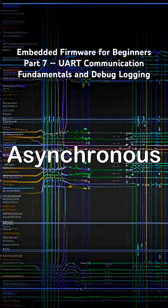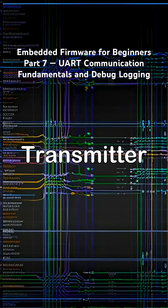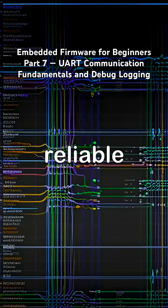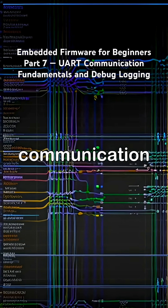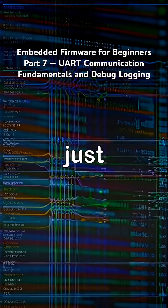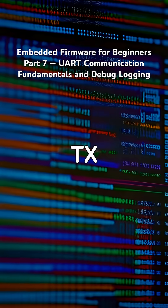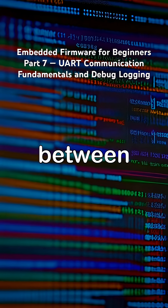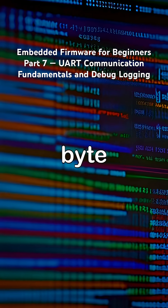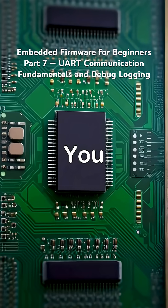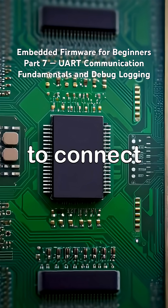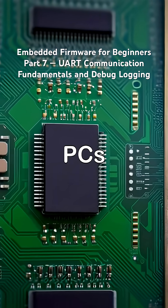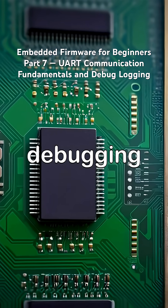UART, or Universal Asynchronous Receiver Transmitter, is one of the simplest and most reliable serial communication methods that uses just two lines, TX and RX, to transfer data between devices byte by byte. You can use it to connect microcontrollers, sensors, or PCs for testing and debugging.